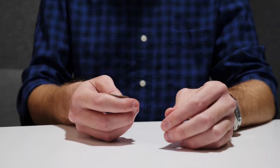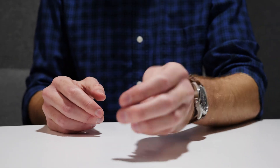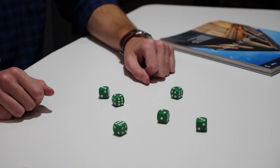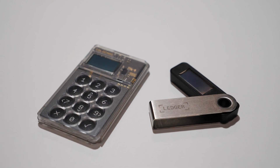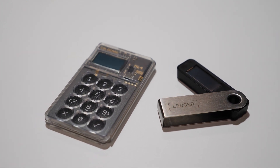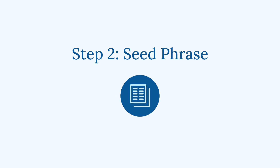This unpredictable randomness could come from many possible sources, such as flipping a coin 256 times, rolling a bunch of dice, or using a specialized algorithm within a hardware wallet. Once this entropy is generated, it's important to keep a record of it so that the master private key can be calculated again in the future. This takes us to the next step: a seed phrase.